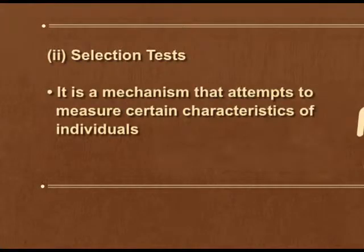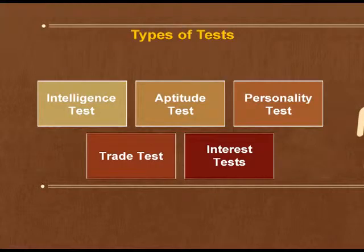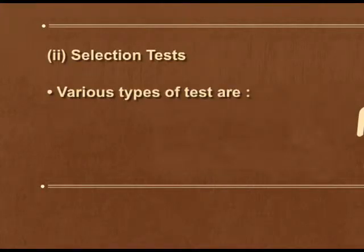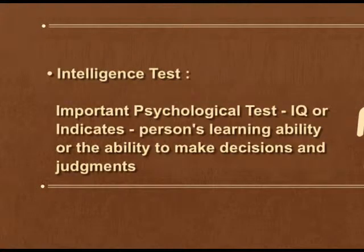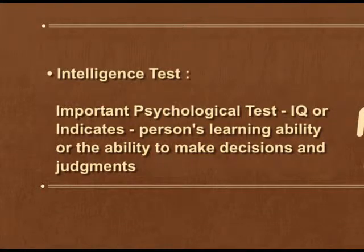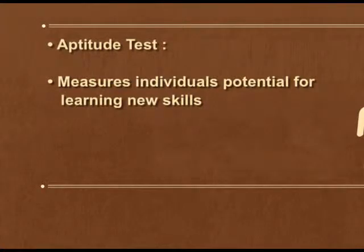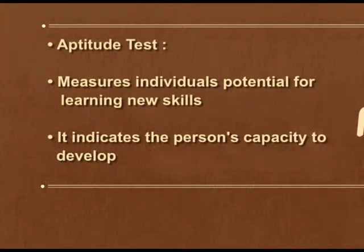The second step is selection test. It is a mechanism that attempts to measure certain characteristics of individuals like aptitude, manual dexterity, intelligence, and personality. The first type is intelligence test, an important psychological test which checks the IQ of a person and indicates their learning ability, decision-making ability, and judgment in various situations. The second is aptitude test, which measures a person's potential to learn new skills and indicates whether the person has the capacity to develop in future.